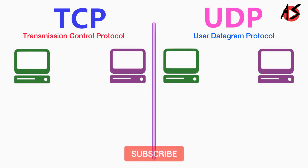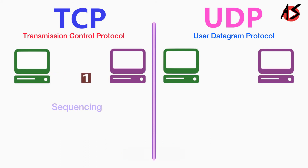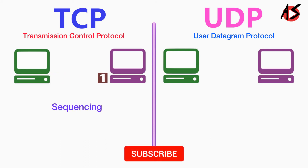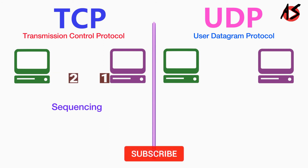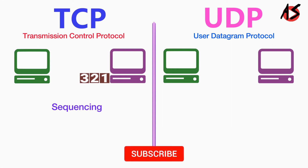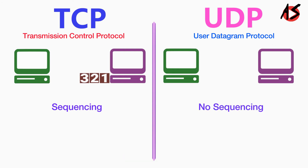In TCP, data is transmitted in a particular sequence, which means the packets arrive in order at the receiver. On the other hand, in UDP, there is no sequencing of data.